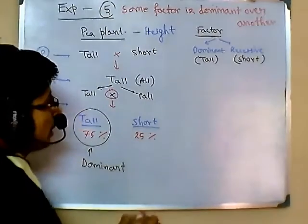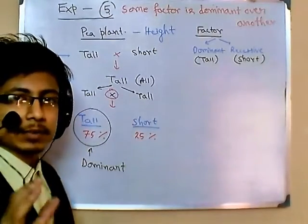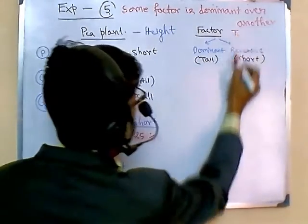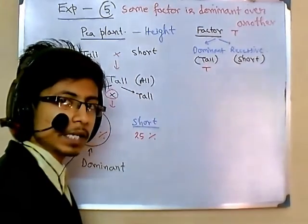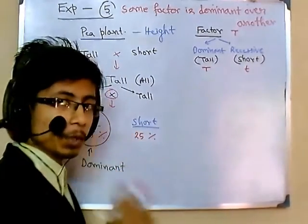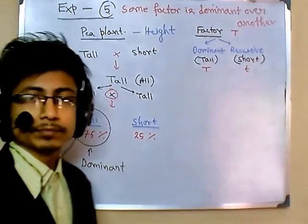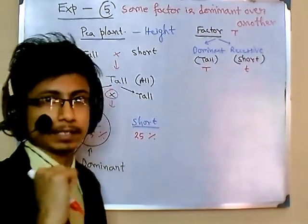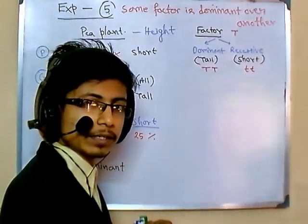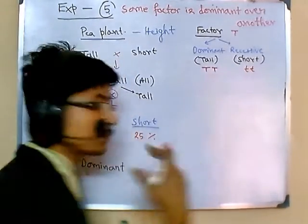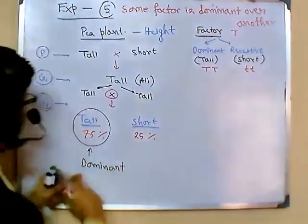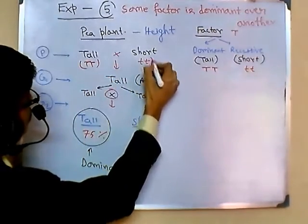To designate these mathematically: the factor for tall is represented by capital T (dominant), and for short by small t (recessive). Since we know factors are present in pairs, the tall pure breed is capital T capital T, and the short pure breed is small t small t.